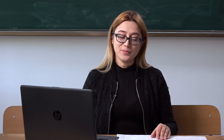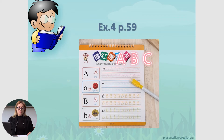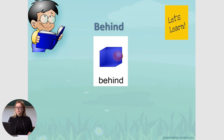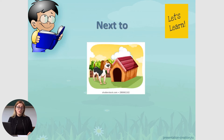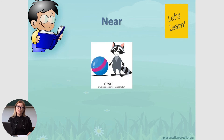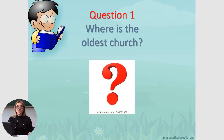Now you are ready to look again at the text and answer the questions in Exercise 4, page 59, using the words from the box. The words in the box are: next to, behind, between, and near.